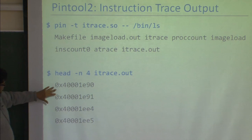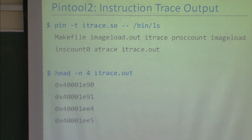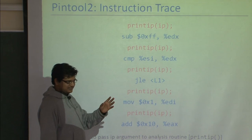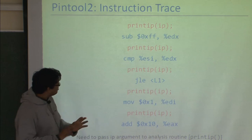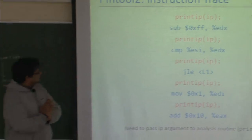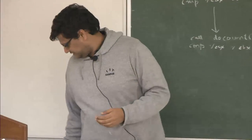The tool creates an itrace.out file and prints instruction addresses. IARG_INST_PTR is a macro defined by the PIN API — it gives the instruction pointer for the current instruction. PIN computes and manages the instruction pointer, and printIP is the analysis function we supply.